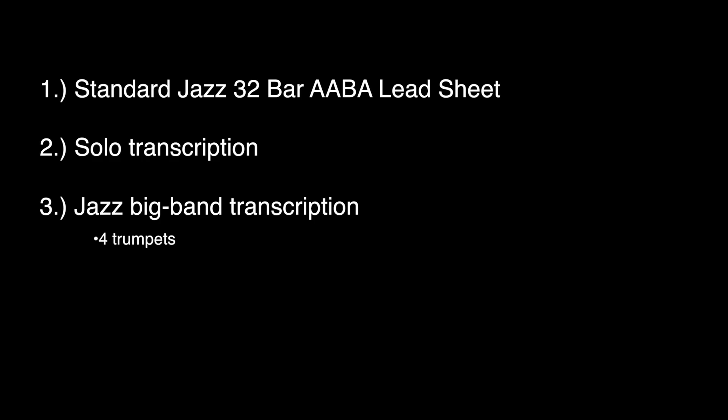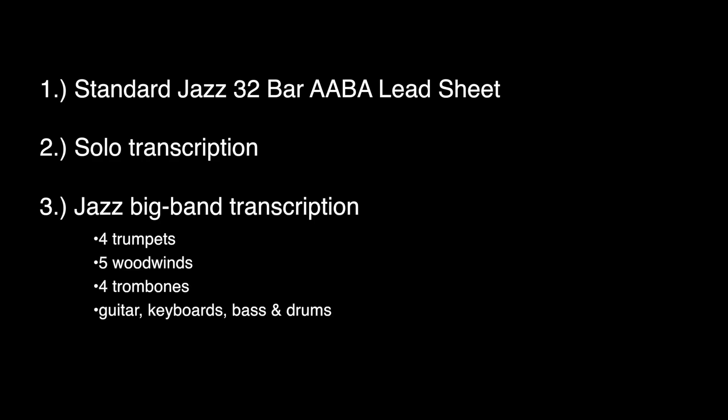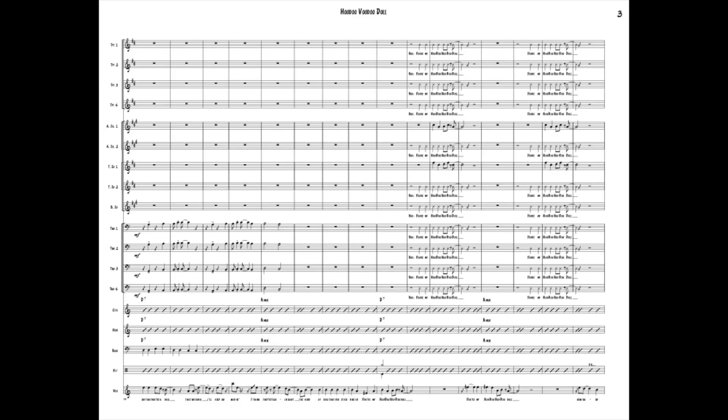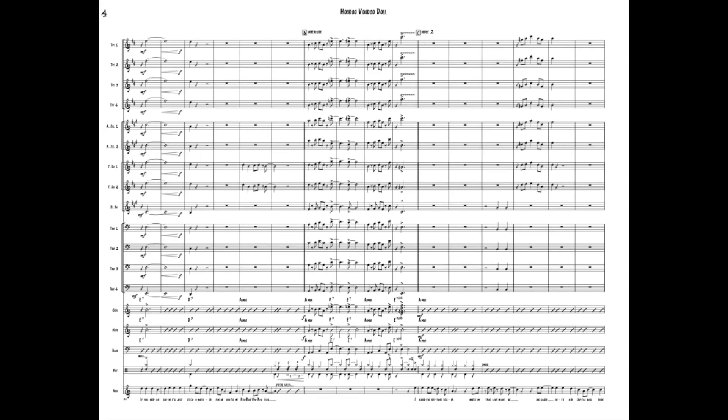And finally, I'm going to try and transcribe 16 bars or so of a full big band chart with four trumpets, five saxophones, four trombones, a full rhythm section, and vocals as well. For this I picked the first little bit of Brian Setzer's amazing song "Hoodoo Voodoo Doll," which is sort of in the middle when it comes to arrangement difficulty, which makes it a good candidate for this.